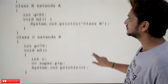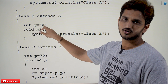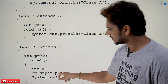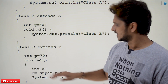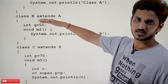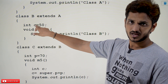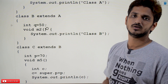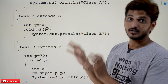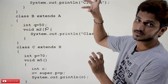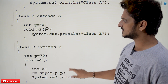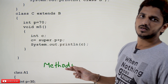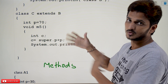Now assume that if you change int q = 50 to int p = 50 in class B. Whenever you call super.p, it is going to check the first occurrence in the super classes, which is now class B where p = 50. So it gets the value 50, and 50 + 70 = 120. Our output is 120. That point is very important — that is why we repeated it twice.